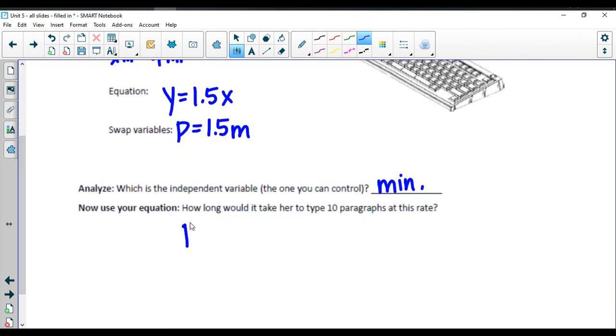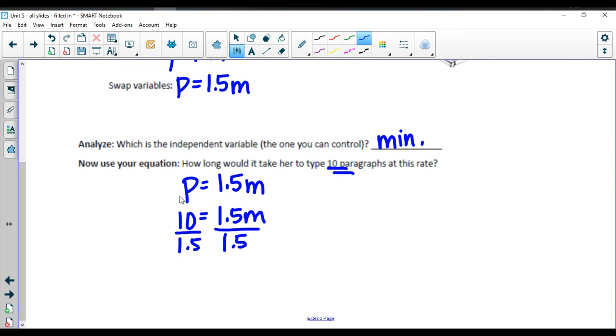We're going to use our equation here. Paragraphs is equal to 1.5 times M. How long would it take her to type 10 paragraphs? 10 is going to go in place of the P here, which is different than our other equations that we've seen so far in this lesson. We're going to have to divide by 1.5 to get our answer here. And when we do that, we get a really yucky decimal that repeats itself. So we have six and two thirds is equal to M.